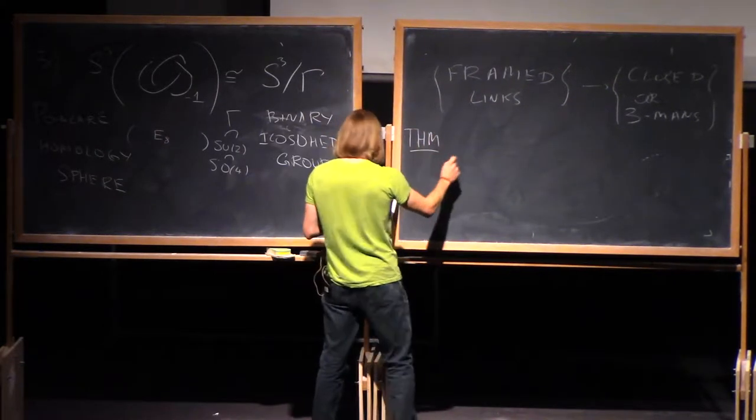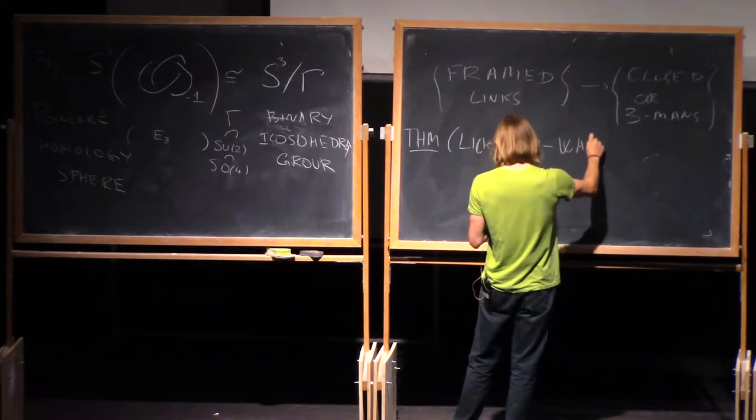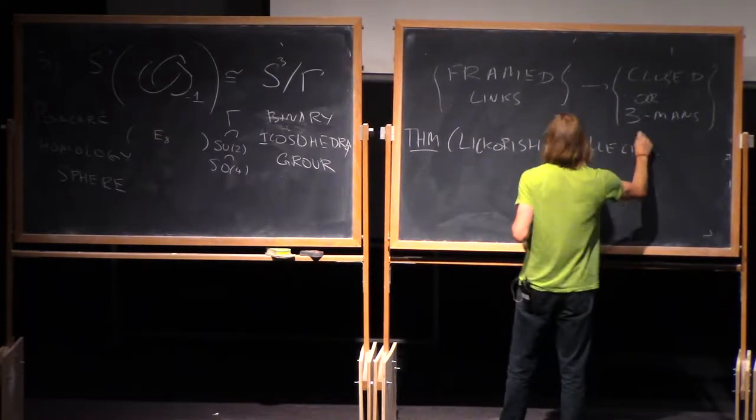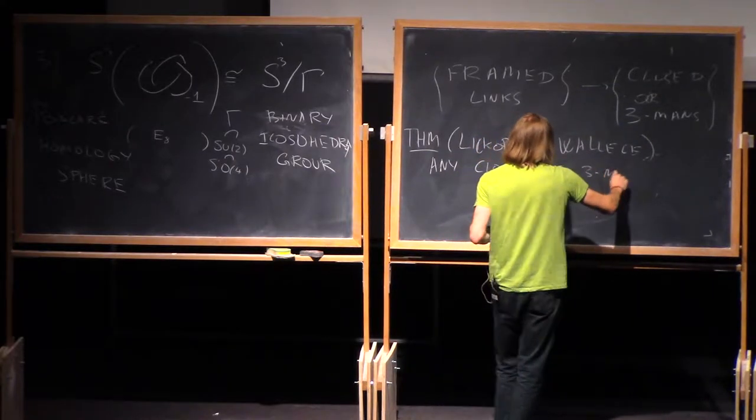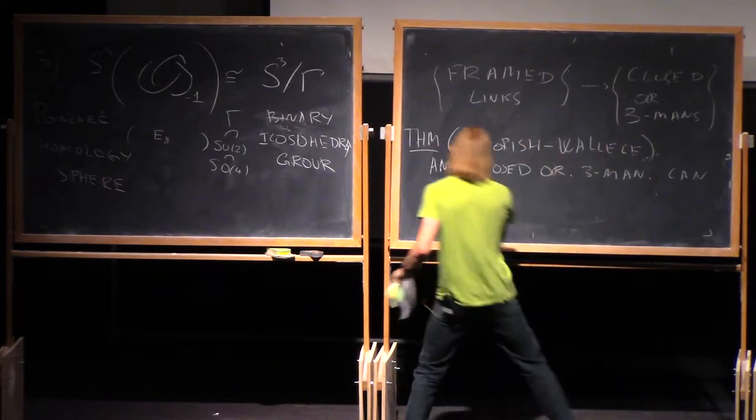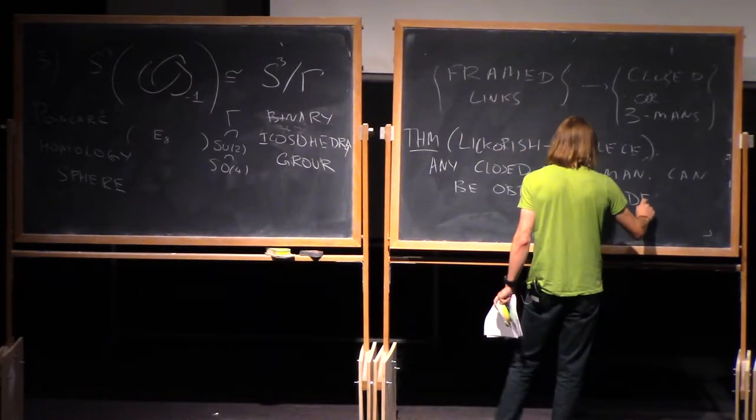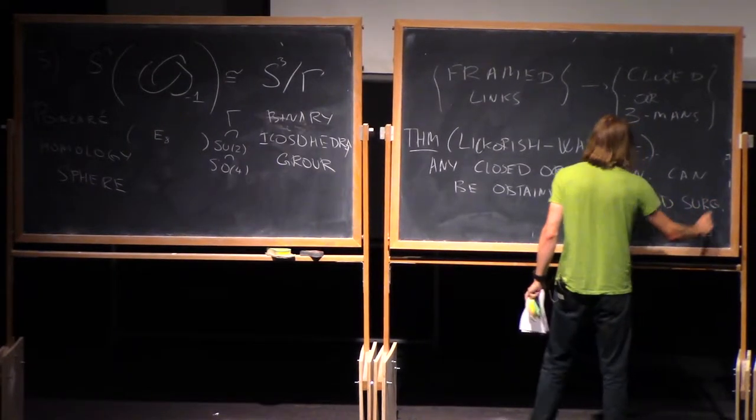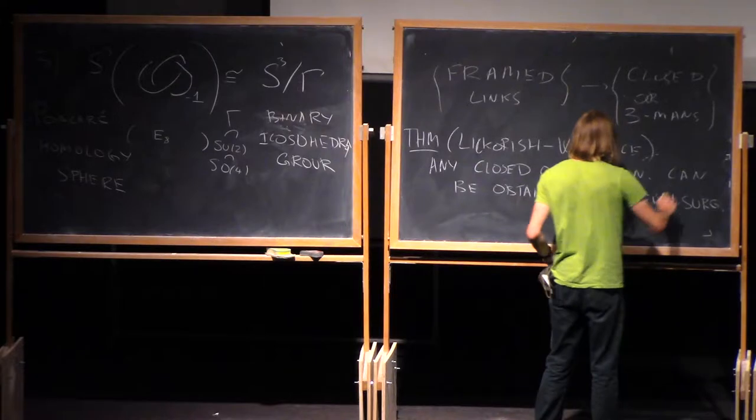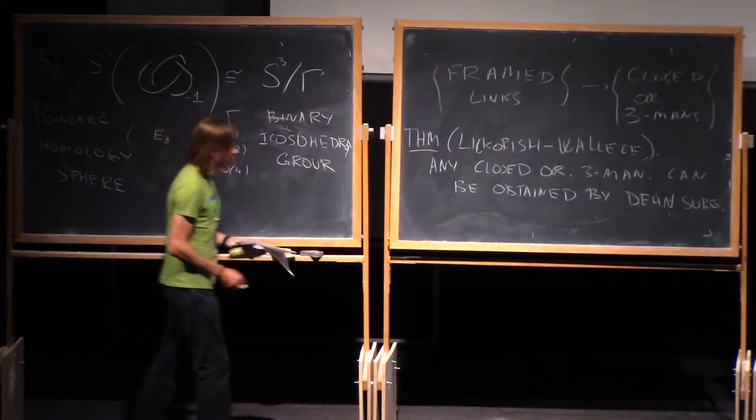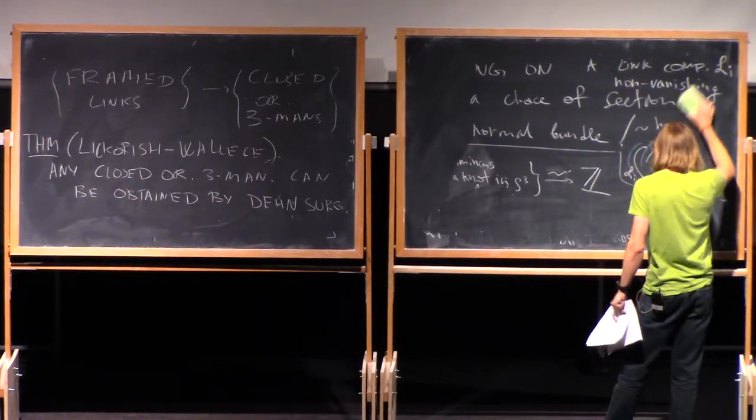First, there is a theorem by Lickorish and Wallace. Any closed oriented three-manifold can be obtained. It's actually a stronger version of the statement, so I can actually only consider links of some specific type. But let me not go into this. So this essentially claims that this map is surjective.